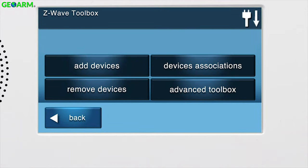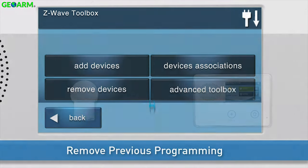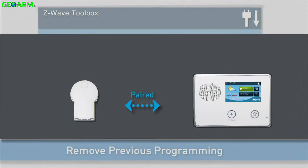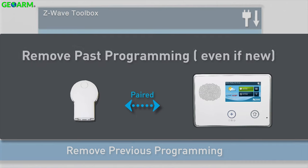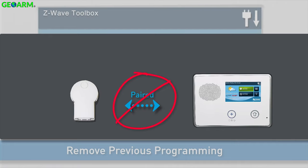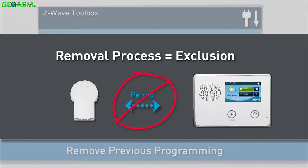You are now in the Z-Wave Toolbox. Z-Wave devices such as the Lamp Module may need to have past programming removed before they can be added to a panel, even if they are new. We do this by performing the removal process, which is also known as exclusion.